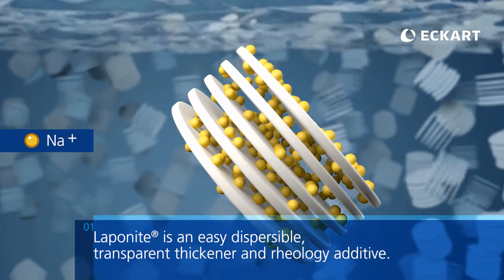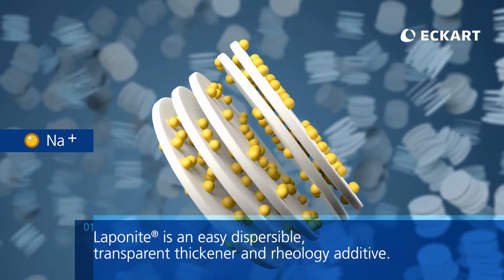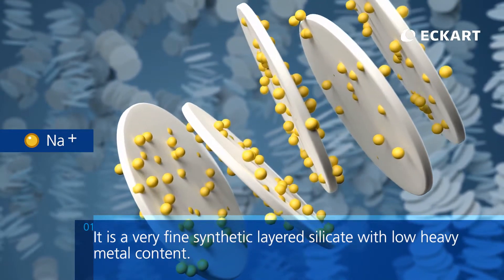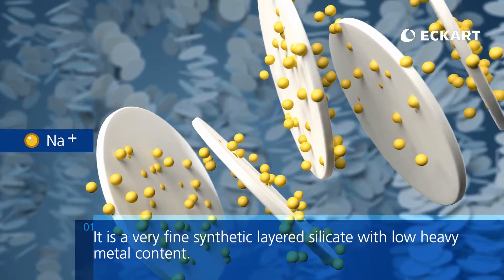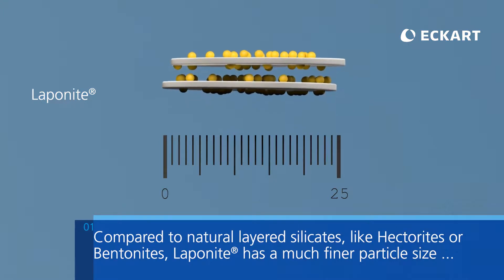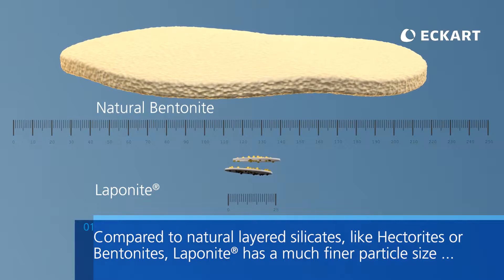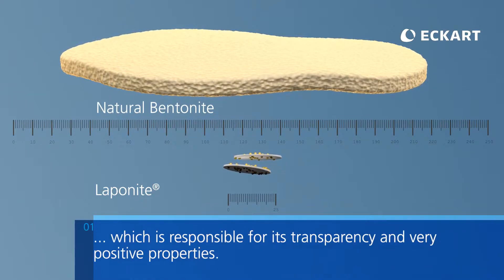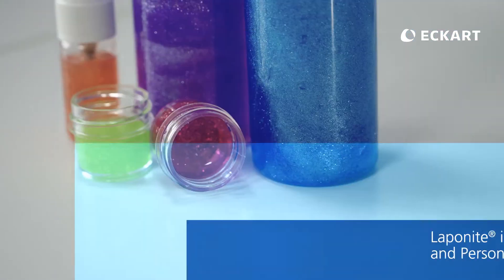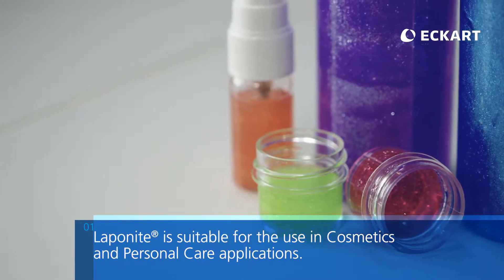Lapinite is an easily dispersible, transparent thickener and rheology additive. It is a very fine synthetic layered silicate with low heavy metal content. Compared to natural layered silicates like Hectorites or Bentonites, Lapinite has a much finer particle size, which is responsible for its transparency and very positive properties. Lapinite is suitable for use in cosmetic and personal care applications.